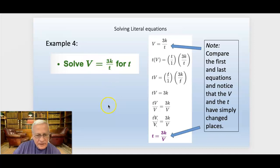Now I want you to pay attention to this. Look at the very top where we started: V equals 3K over T. And look at the bottom. It says T equals 3K over V. When you're given something like this and you're solving for what's in the denominator, the V and the T can just switch places. When the V and the T just switch places, what you did was multiply both sides by T and divided both sides by V. That's a quick little trick you can use if you want.